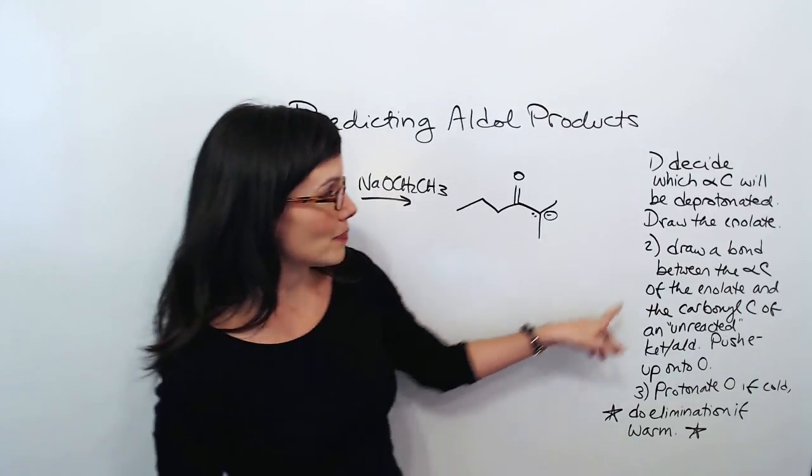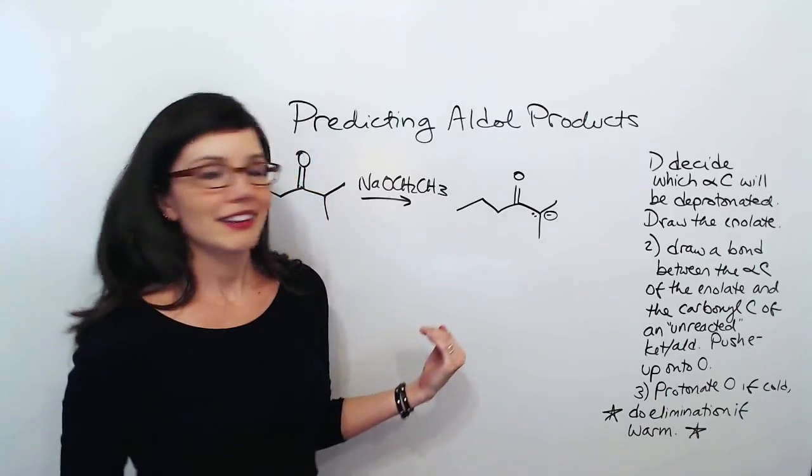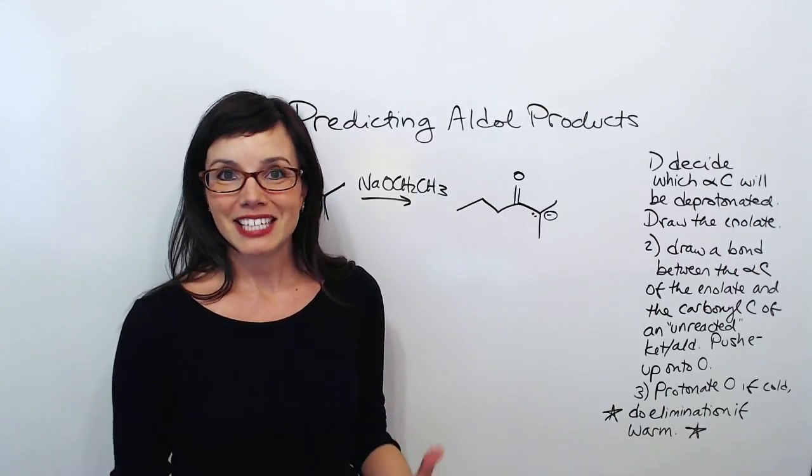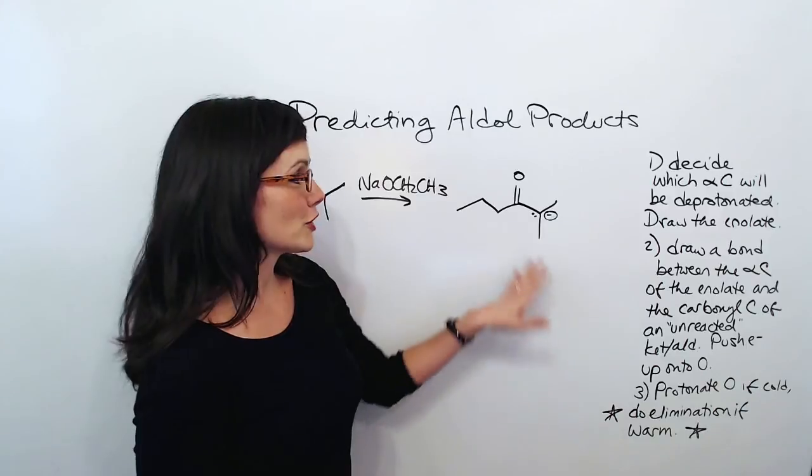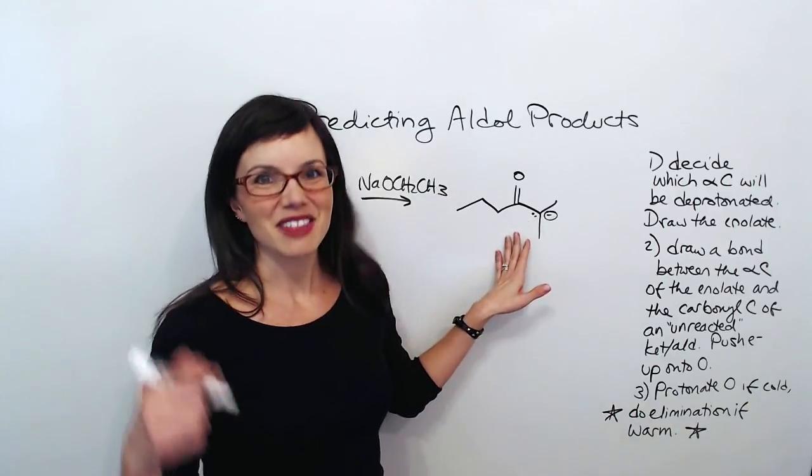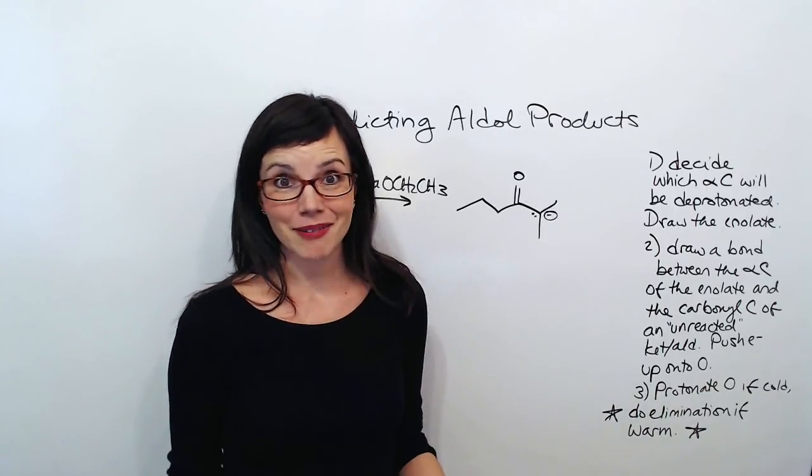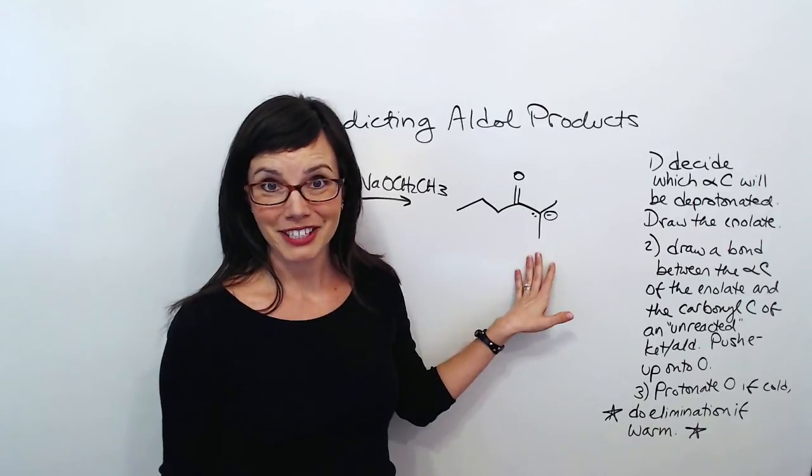But my next step is to draw a bond between this alpha carbon and the carbonyl carbon of my other molecule. So it's going to be really convenient for me to work from this structure, as long as I remember that this isn't really the right structure to use if I have to draw the mechanism. But since I'm just doing this the easy way, this is the one I totally want to use.